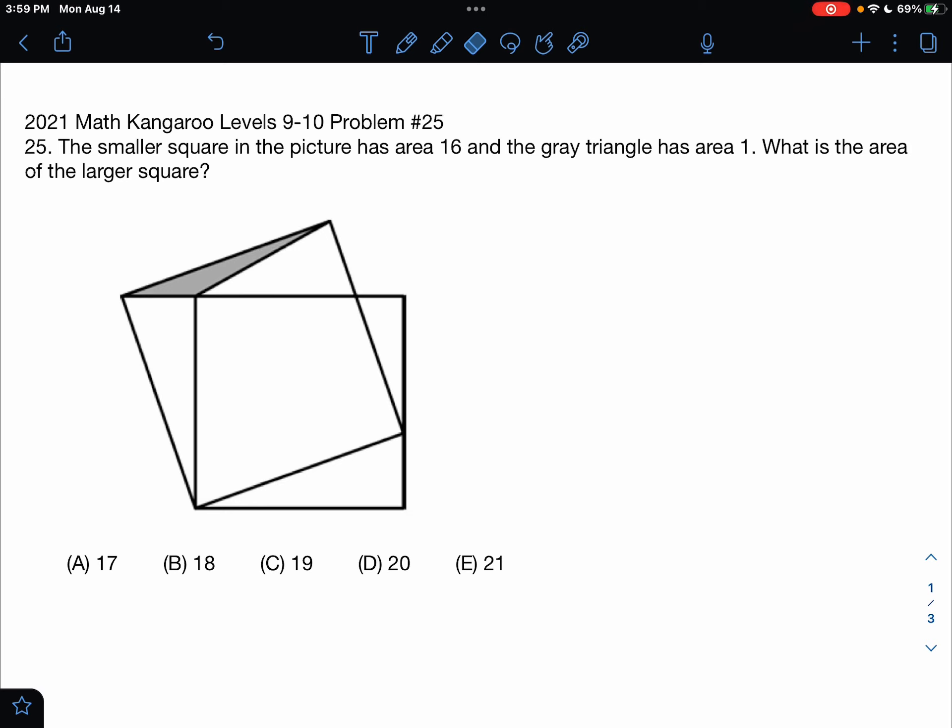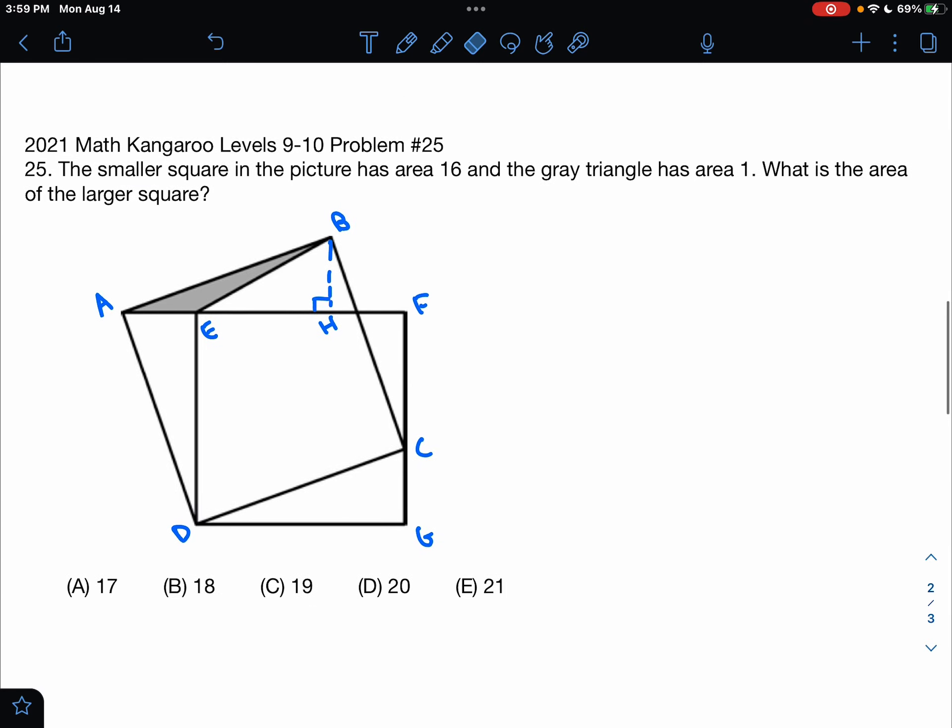The choices are: A) 17, B) 18, C) 19, D) 20, or E) 21. This is the problem as it originally appeared on the test and here is where we'll be doing the solution. As you can see, I've marked up the image a little bit so it's easier to see what I'm referring to.